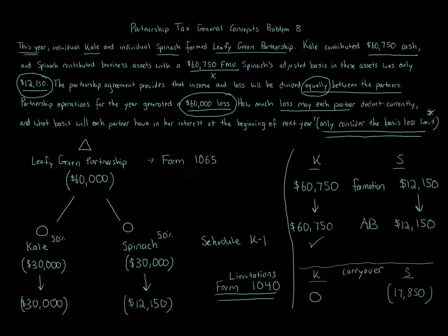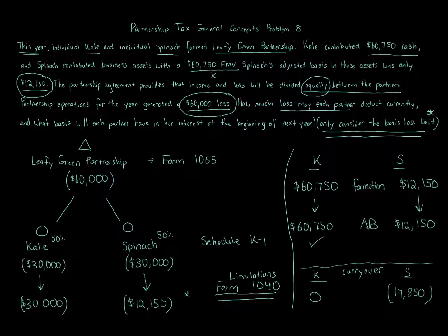To summarize the answers for how much loss can be taken: Kale can take the full $30,000 loss — Kale's full portion. Spinach can take only $12,150, limited to her basis. For carry-over loss: Kale has zero carry-over because all of it was used. Spinach has $17,850 of suspended loss that rolls over to next year, and we continue to roll over that loss until it is used up.